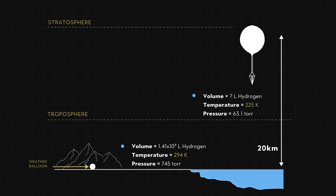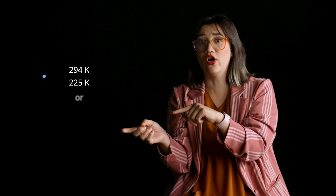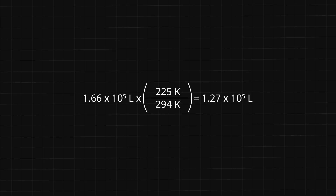So, we're either multiplying by 294 Kelvin divided by 225 Kelvin, or 225 Kelvin divided by 294 Kelvin. Our intuition tells us that the volume is decreasing due to the decrease in temperature, so it must be the ratio that is less than 1. This means: 1.66 × 10⁵ liters × (225 Kelvin ÷ 294 Kelvin) = 1.27 × 10⁵ liters.